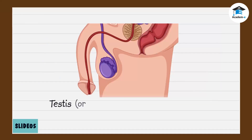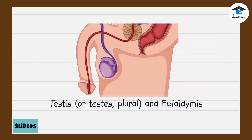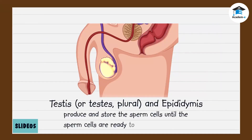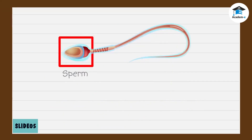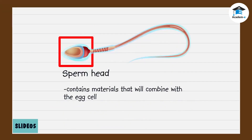For males, the body parts called testis and epididymis produce and store the sperm cells until the sperm cells are ready to exit the body. A sperm cell has a head that contains materials that will combine with the egg cell.